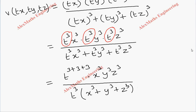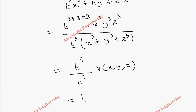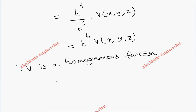The numerator has t⁹ and the denominator has t³. The remaining terms are nothing but our original function v(x, y, z). After cancelling, we get t⁶ · v(x, y, z). From this, it is clear that v is a homogeneous function of degree n = 6.